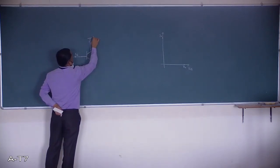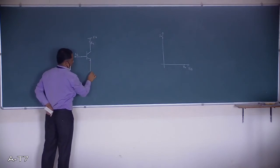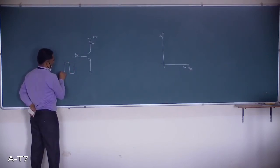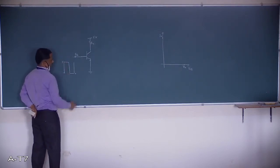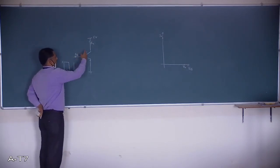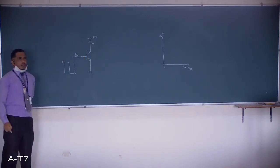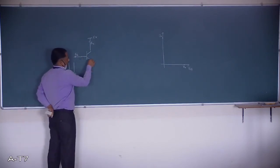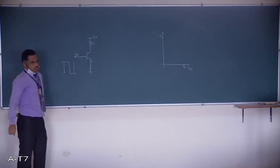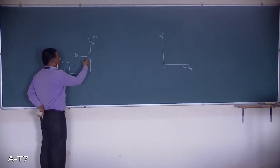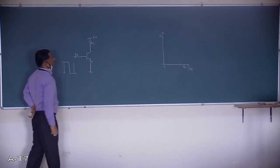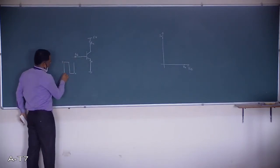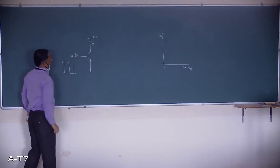The circuit has a collector resistance RC, a base resistance RB, a supply VCC of 5V, and the emitter grounded. A square wave switching between 5V and 0V is applied at the base through RB. RB is much larger than RC, so the base current is very small. When this is energized, we check the base-to-emitter and base-to-collector junction conditions.